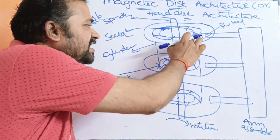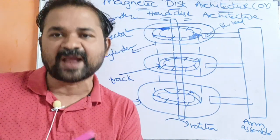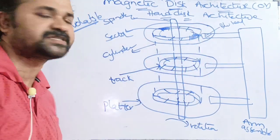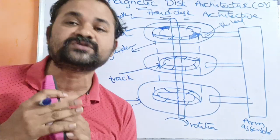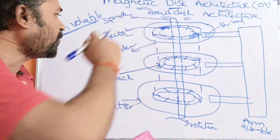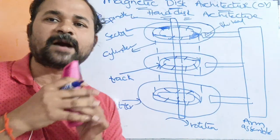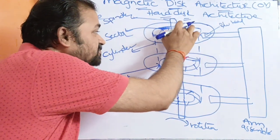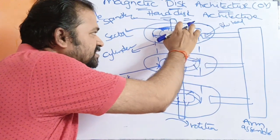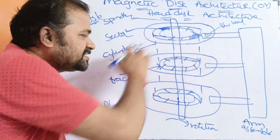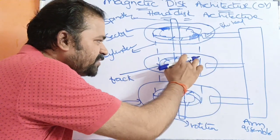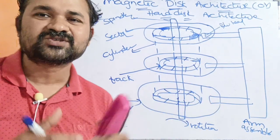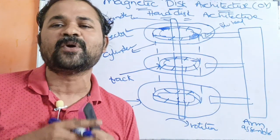Each platter has two surfaces: a top surface and a bottom surface. The platters are subdivided into tracks. We can divide a platter into a number of tracks — track 1, track 2, and so on. Likewise, we can divide all the platters into a number of tracks.